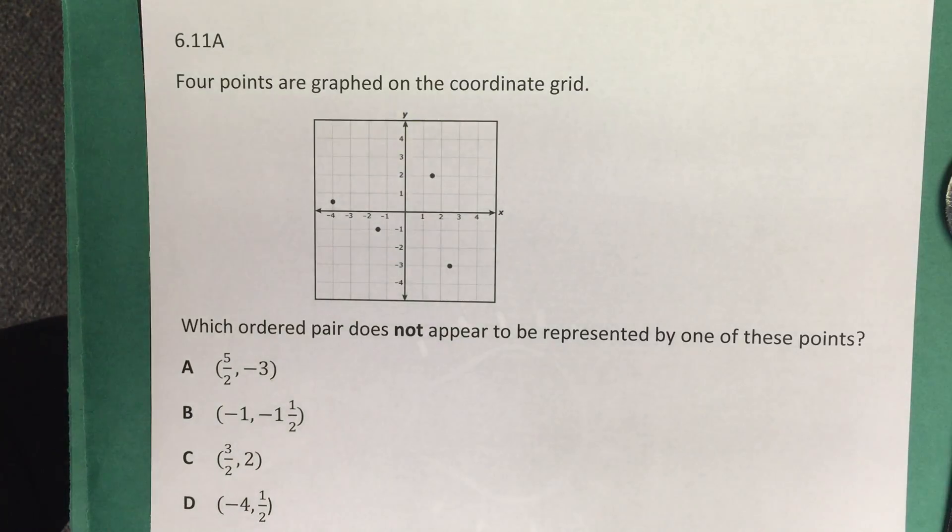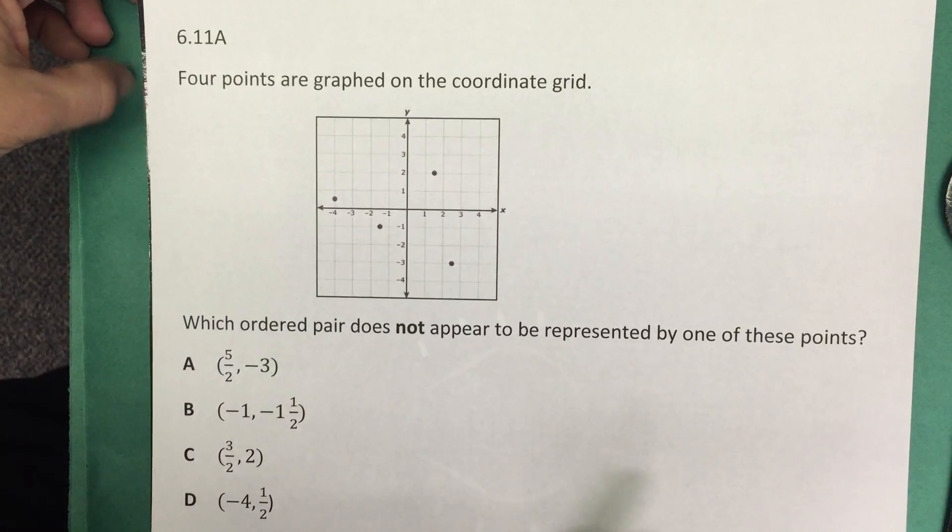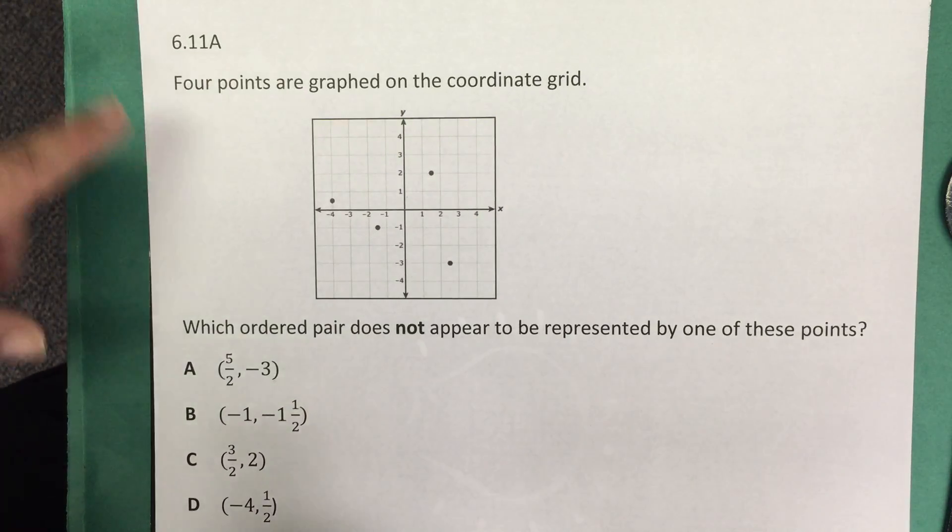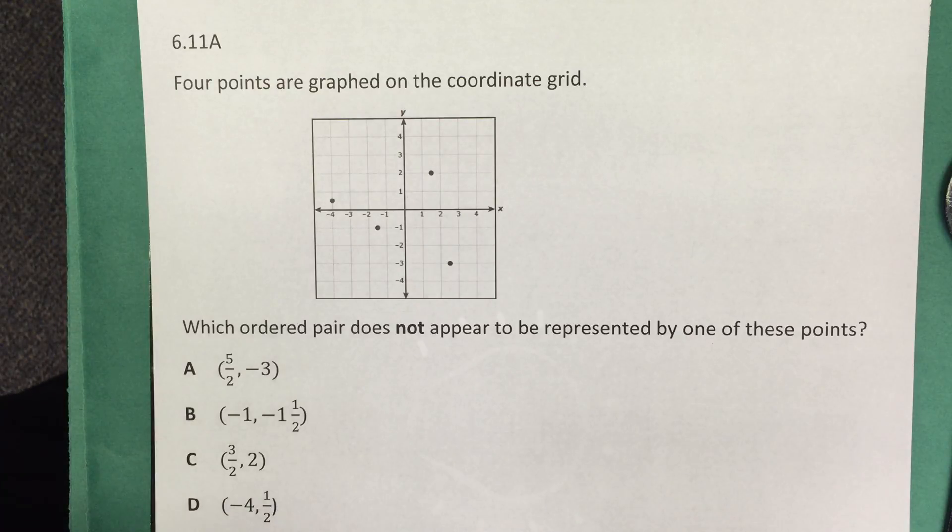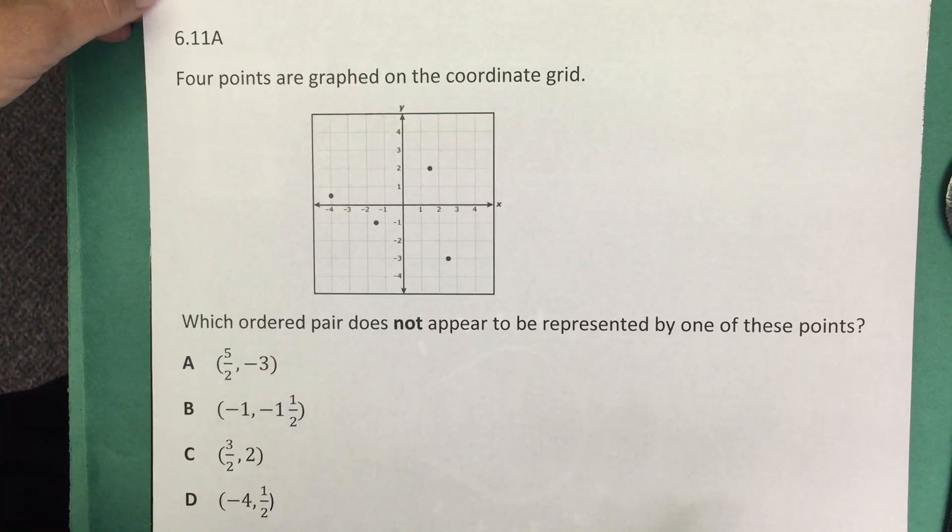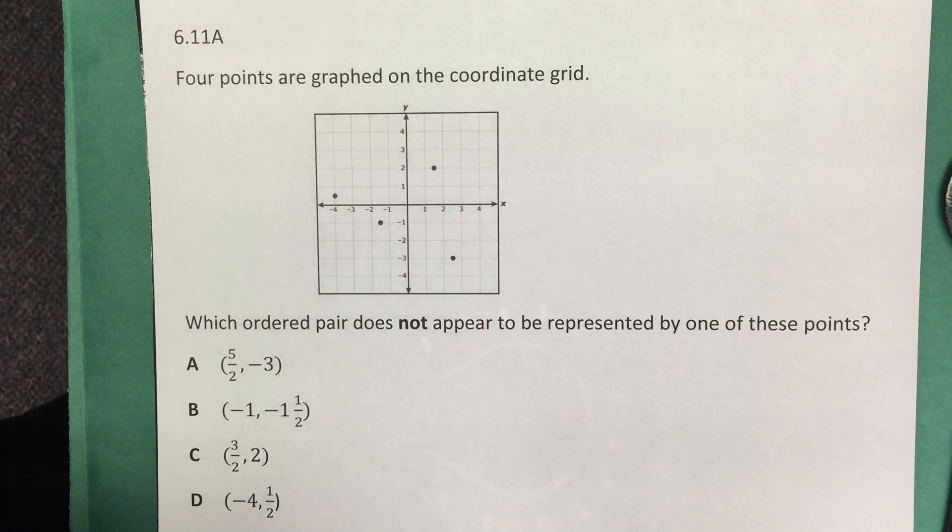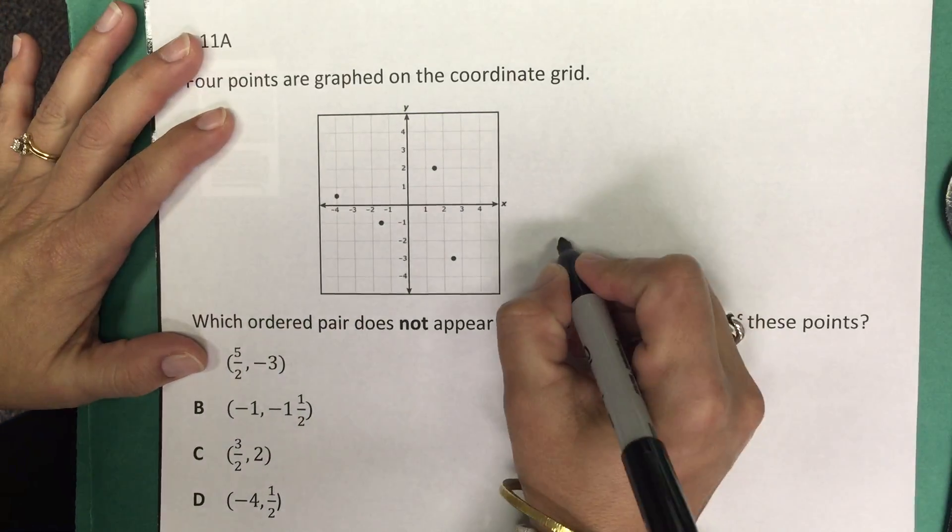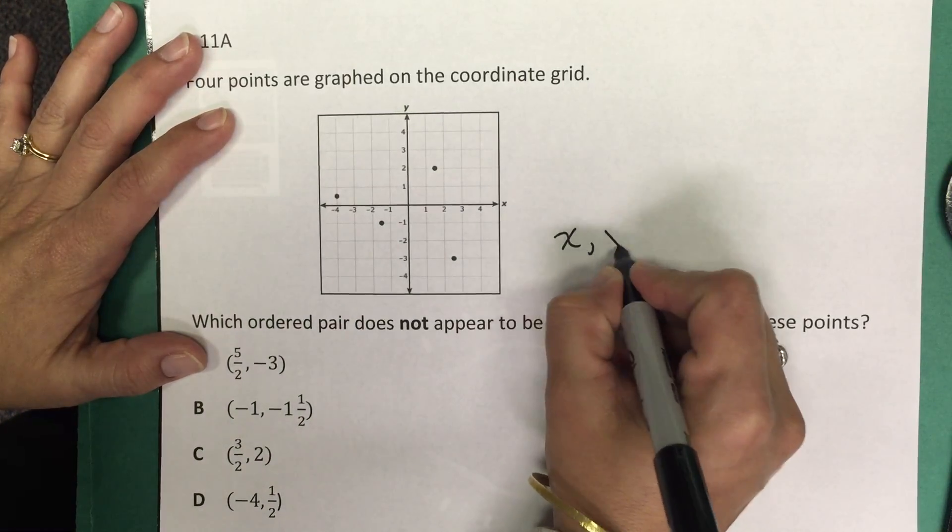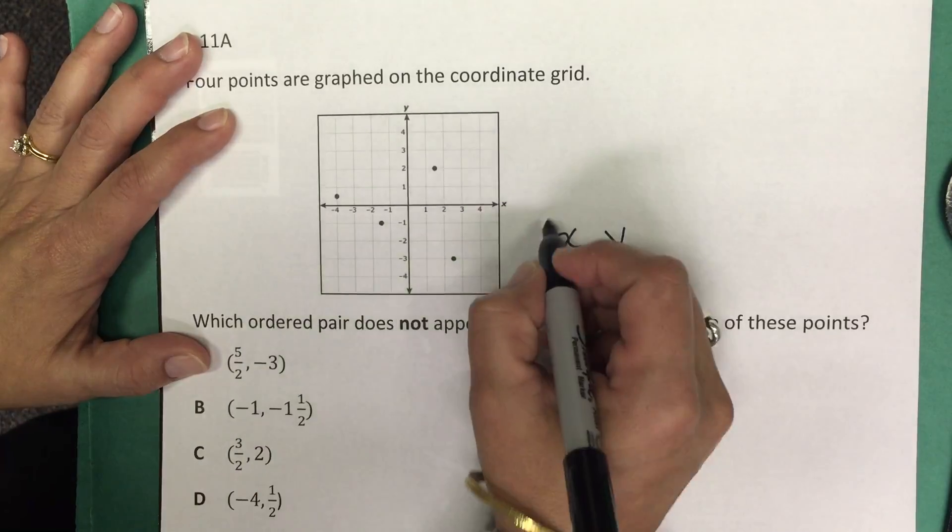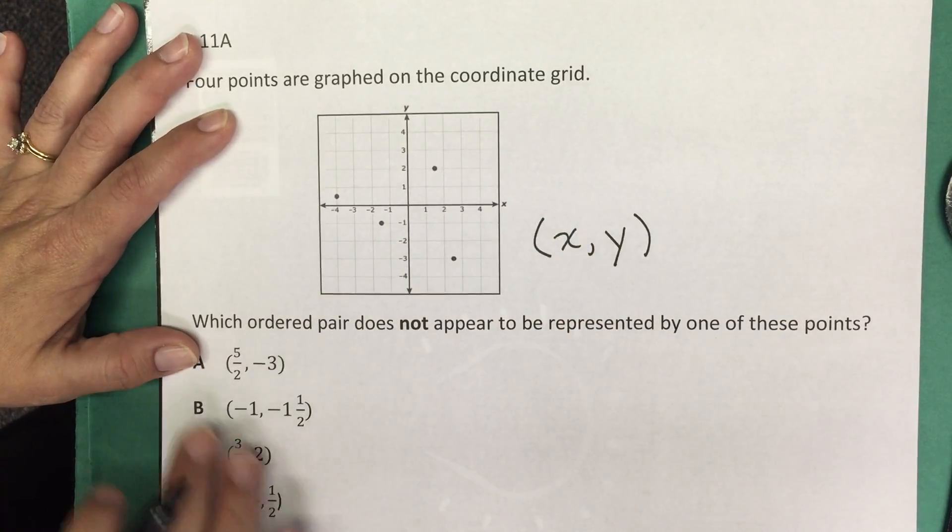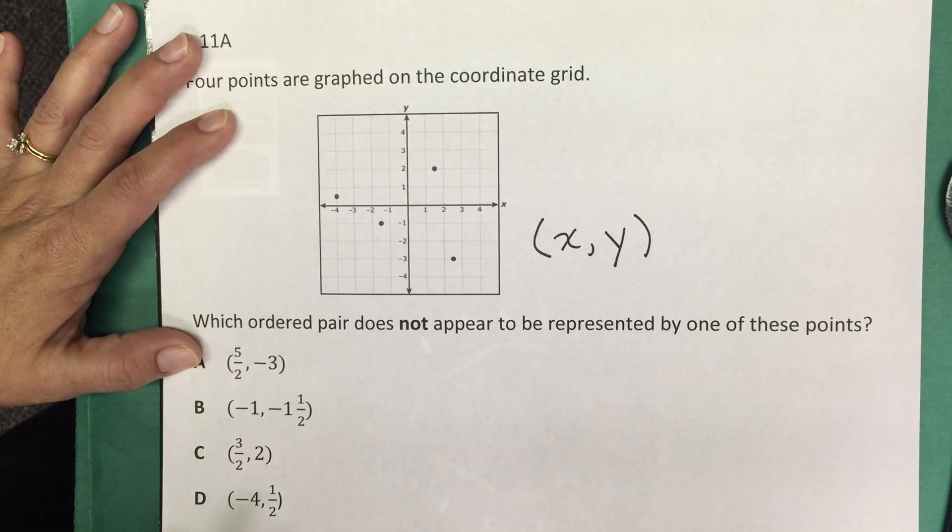Let's look at an example. This example is from the STAAR test. It's a released item from the 2016 STAAR test for grade six. The problem says: Four points are graphed on the coordinate grid. Which ordered pair does not appear to be represented by one of these points? So let's remember that in a coordinate pair, the x-coordinate is graphed first and then the y-coordinate. We have four different answer choices here. Some answer choices are given as mixed numbers and proper fractions.